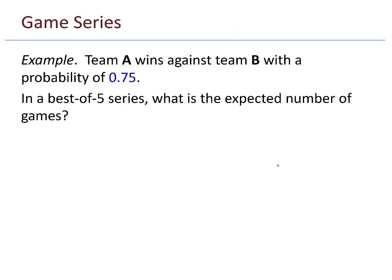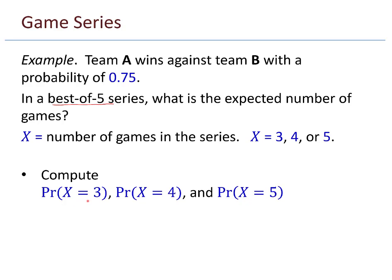Let's turn our attention to another game series problem. Team A wins against Team B with probability 0.75. In a best-of-5 series, what is the expected number of games? This is kind of a neat question—we're not talking about probability anymore, but expected number. Let X be our number of games, our random variable. The number of games in a series is either 3, 4, or 5. So what we really need to do is figure out the probability the series lasts 3 games, 4 games, and 5 games. Then I can compute the expected value of X.